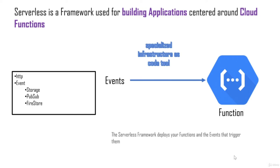The function refers to the cloud function, and the event refers to all the triggers to that particular cloud function. Events can be of multiple types — the most common are HTTP events and other specialized events including storage, Pub/Sub, and Firestore. Serverless can also be termed as a very specialized infrastructure-as-code tool, different from Ansible and Terraform in that you can only create serverless applications with it.